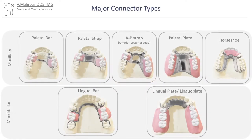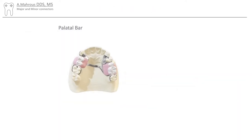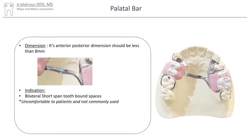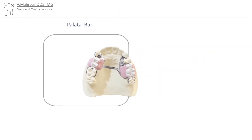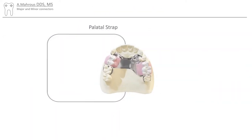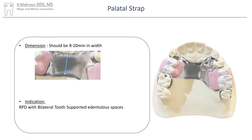Now let's go over some of the more common types of major connectors. The palatal bar major connector is generally less than 8mm in anterior-posterior dimension and is indicated in bilateral tooth-bound short edentulous spans. It's not very comfortable and not often used. Next up, the palatal strap major connector measures about 8-20mm and is generally indicated in RPDs with bilateral tooth-supported mid-edentulous spans.